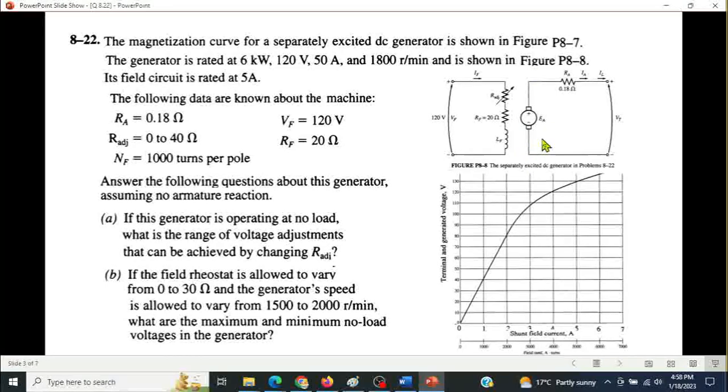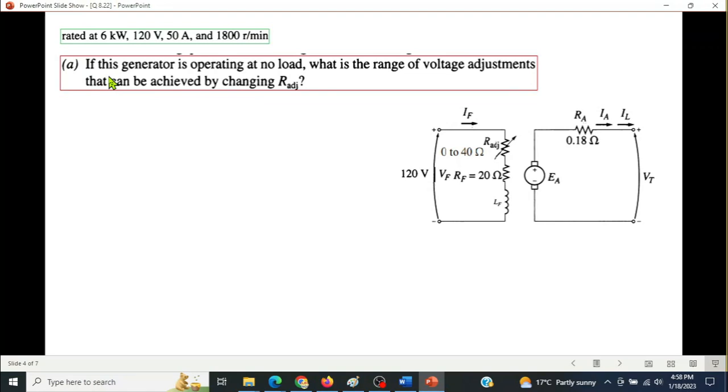Slightly different range 0 to 30 speed fixed from 1500 to 2000 RPM, minimum output voltage and maximum output voltage at no load condition. So the problem question: if the generator is operating at no load, what is the range of voltage adjustment that can be achieved by changing our adjustment? So first, for R adjustment zero ohm, IF will be maximum because I am the RF plus R adjust.